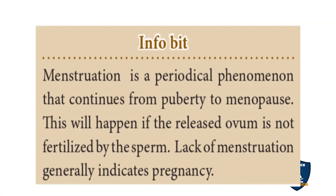If the egg is unfertilized, the next menstruation begins. Menstruation is a periodical phenomenon occurring from puberty to menopause. During pregnancy there is a lack of menstruation.